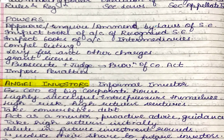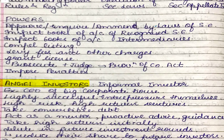The bylaws are the internal rules of this association of persons — how members will be appointed, how members will be removed, working hours, work schedule, documentation, billing, etc. Those are all internal rules and regulations. Like in a company, there are articles of association — it is the same concept for stock exchanges.